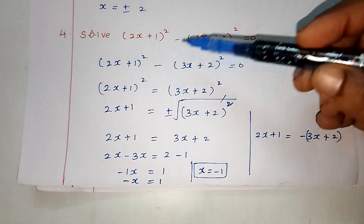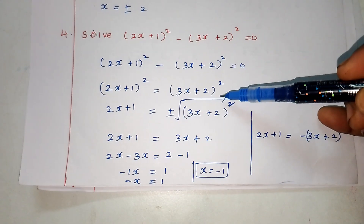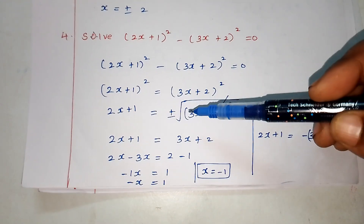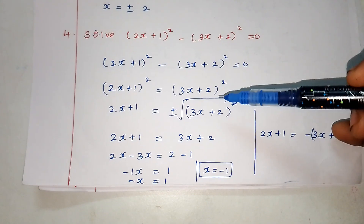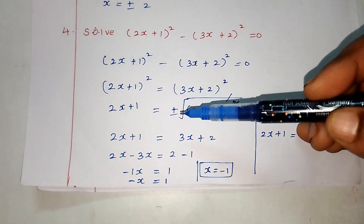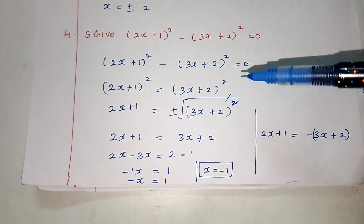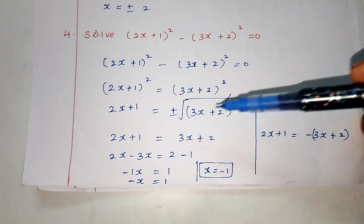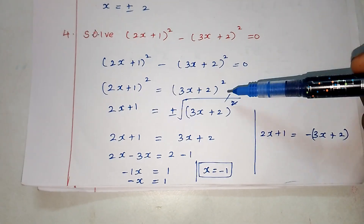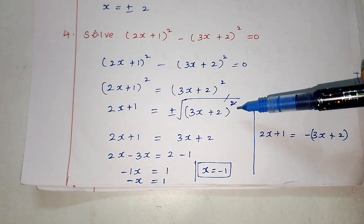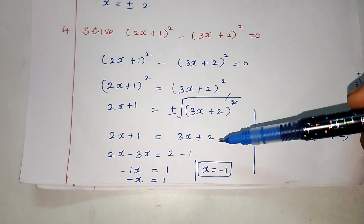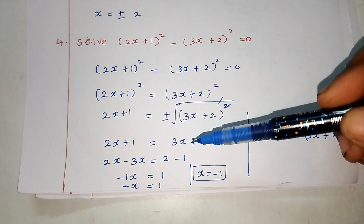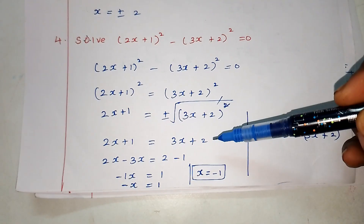Next step: in the minus value equal to n item plus item, 2x plus 1 the whole square is equal to 3x plus 2 the whole square. Now square root is applied — square root is plus or minus. Already square equals square root, so square root cancels and we get 2x plus 1 is equal to 3x plus 2.